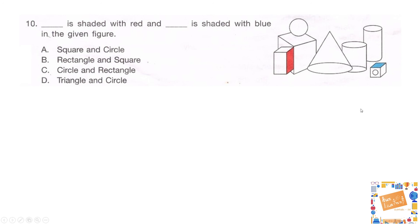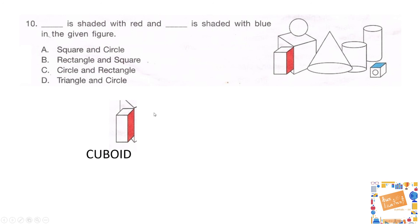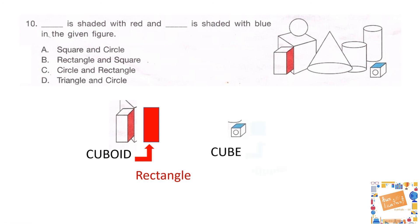Question 10: which shape is shaded with red and which is shaded with blue in the given figure? Options: A — square red, circle blue; B — rectangle red, square blue; C — circle red, rectangle blue. The shape with the red side shaded is a cuboid, whose faces are rectangles. The shape with the blue side shaded is a cube, whose faces are squares. So the correct answer is option B — rectangle is shaded with red and square is shaded with blue.